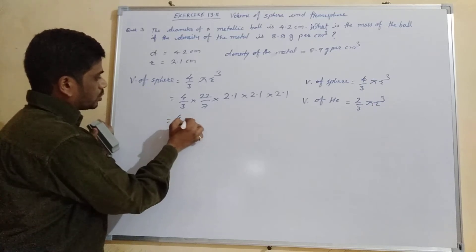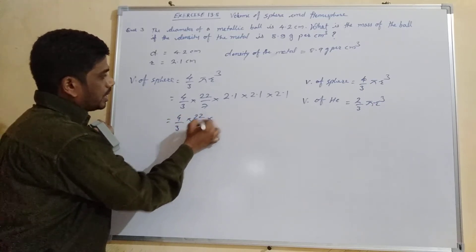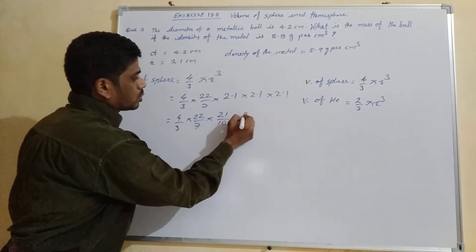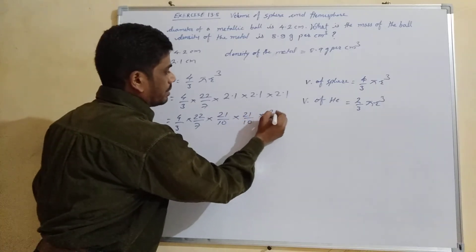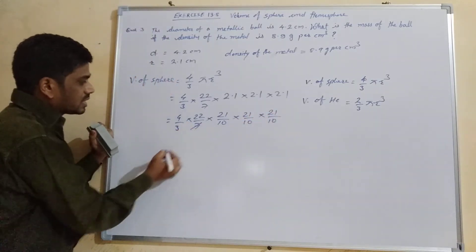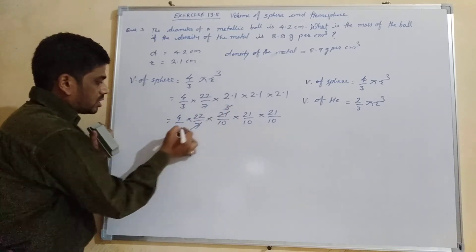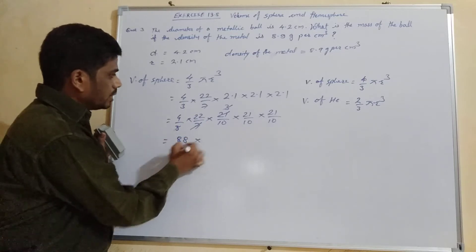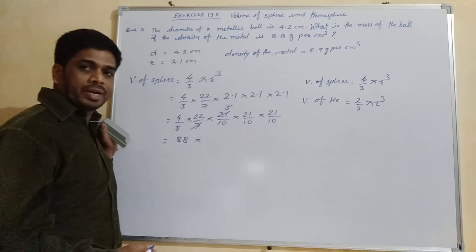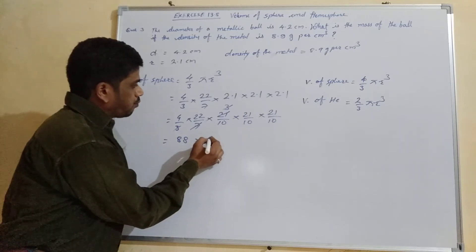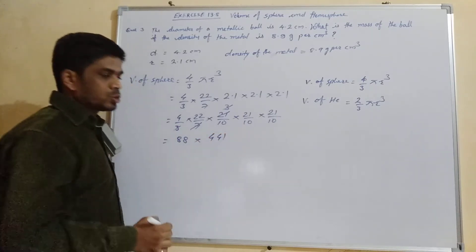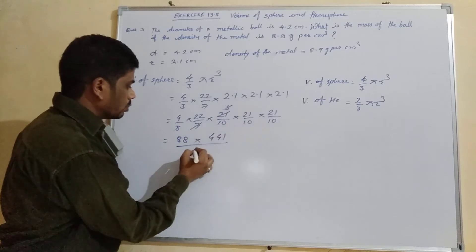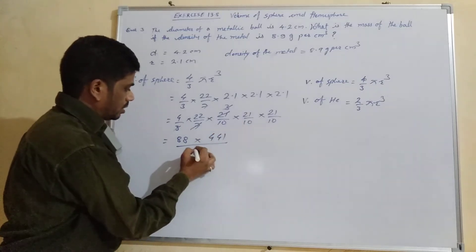We write it as 4/3 × 22/7 × (21/10)³. The 7 and 3 cancel partially — 7 ones are 7, 7 threes are 21, so the 3s cancel. We get 88 multiplied by 21 × 21 × 21. Now 21² = 441, so we have 88 × 441 upon 1000 (since 10 × 10 × 10 = 1000).